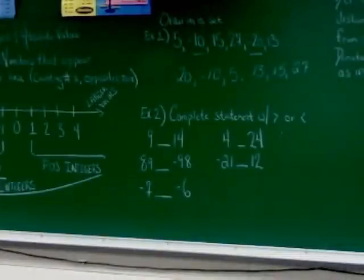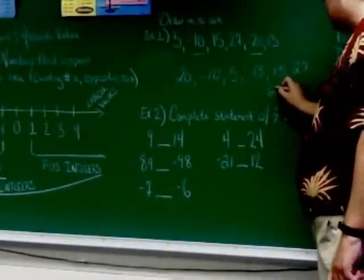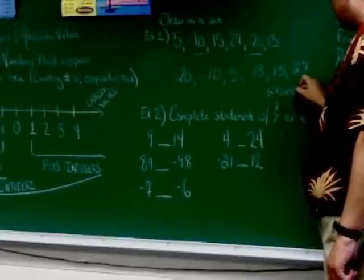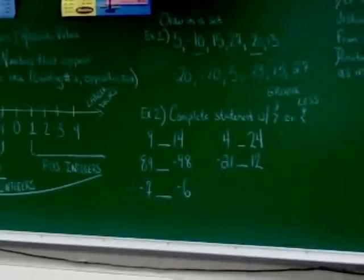In example two, we are asked to complete the statement simply with a greater than or a less than sign. In case you don't know by now, even though you really should, this one here is greater than. And this one here would be less than. And remember, negatives are always smaller than positives. So, go ahead and fill in the blank.